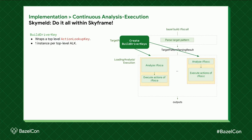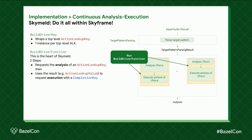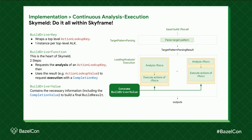That's done with a new concept called the BuildDriverKey — basically another SkyKey that wraps around the action lookup key, which is the input of the analysis phase. It is evaluated with the BuildDriverFunction, which is the heart of SkyMelt. It does two things: first it extracts the action lookup key and performs analysis on that; then it takes the result of the analysis and immediately launches execution for that top-level target — all within this SkyFunction. Finally, you get a BuildDriverValue, which is a wrapper around the completion value where you can extract the result of your build.